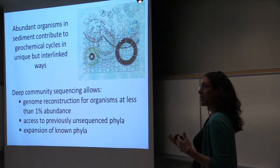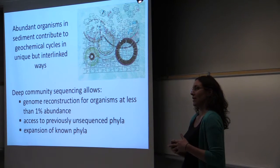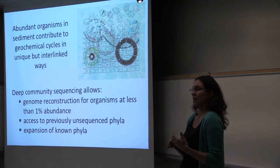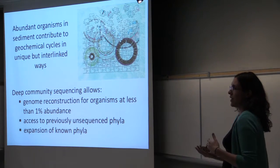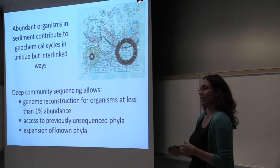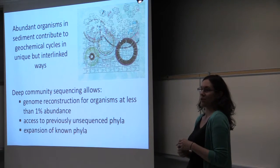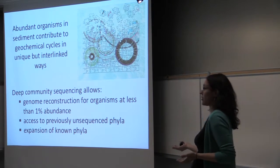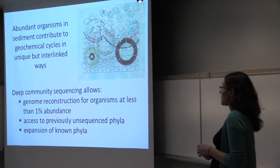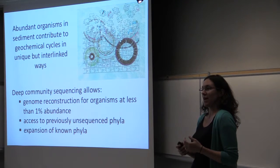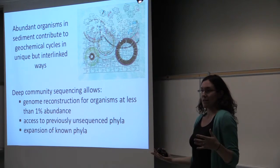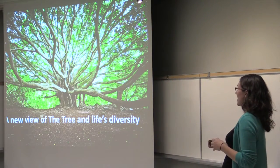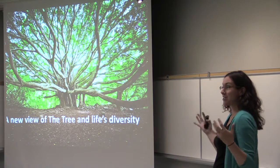This work looked at abundant organisms in sediment and discovered they contribute to geochemical cycles in interlinked, handoff-based ways. It's an example of our ability to go into a complex environment and generate draft genomes for organisms at less than 1% abundance — none were higher than 1%. And it gives us access to previously unsequenced phyla and expansion of existing phyla.